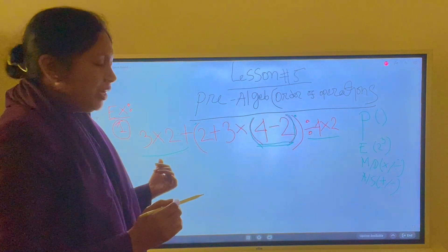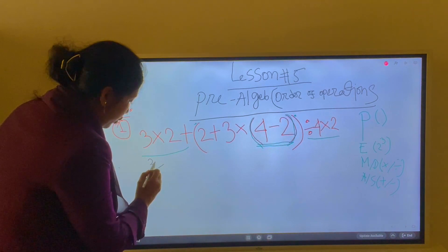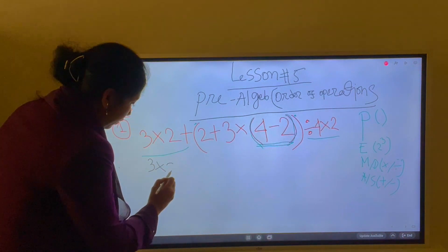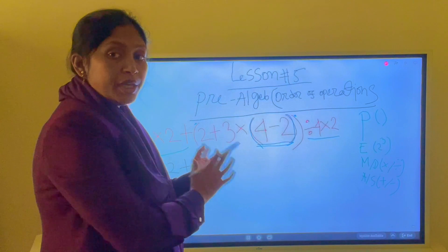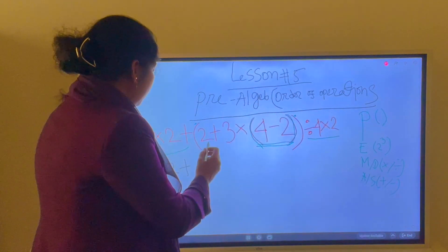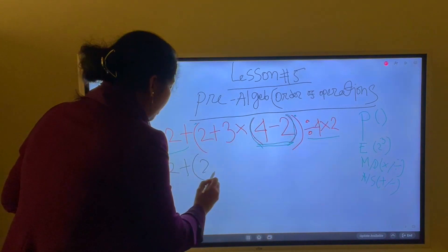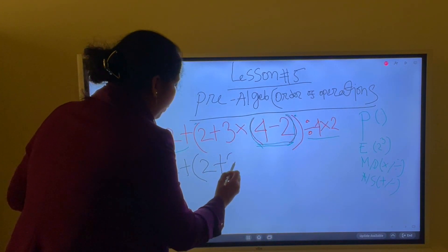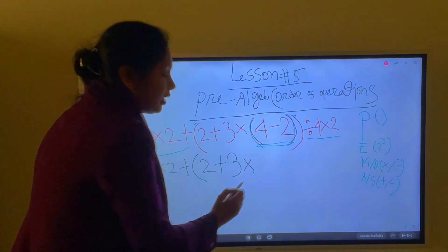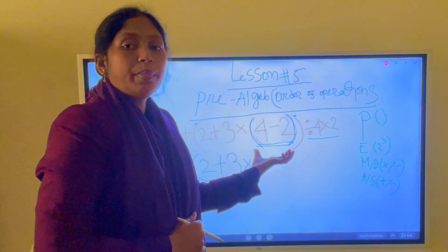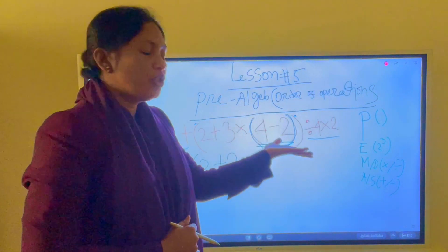So you can see here — bring down 3 times 2, plus, here is the middle part. You can see that the parenthesis starts: 2 plus 3. And 2 plus 3 is the same, so you can see this solution — 4 minus 2 is 2.